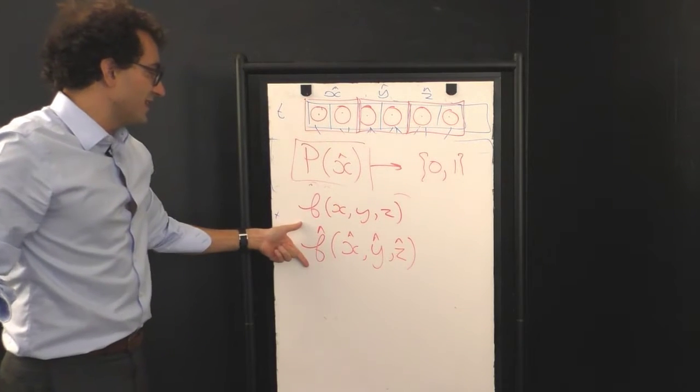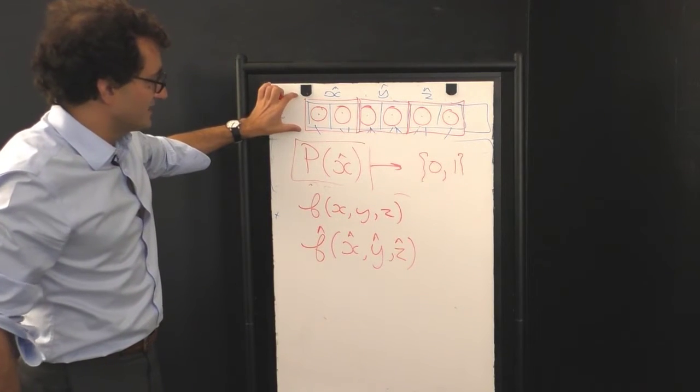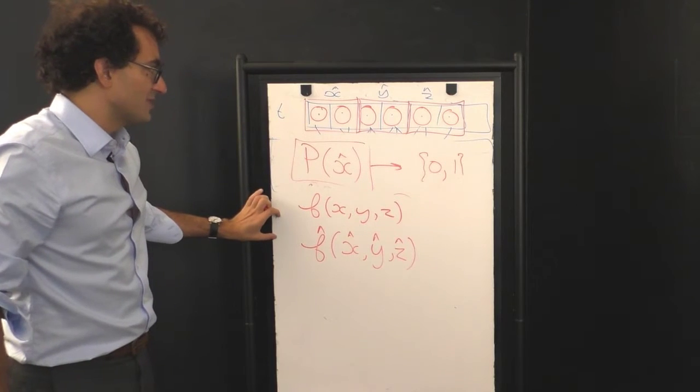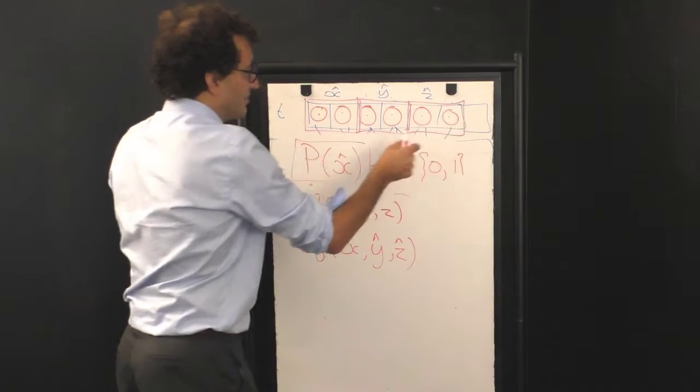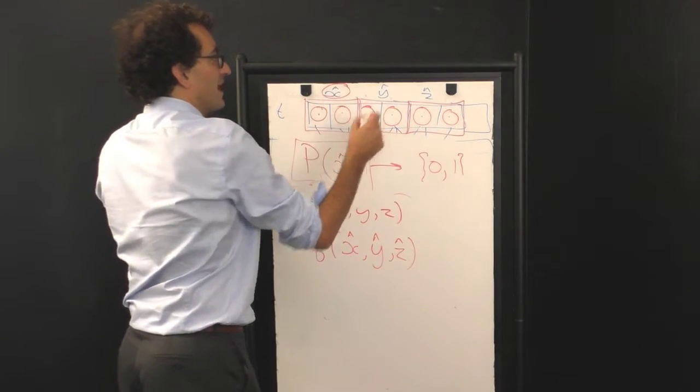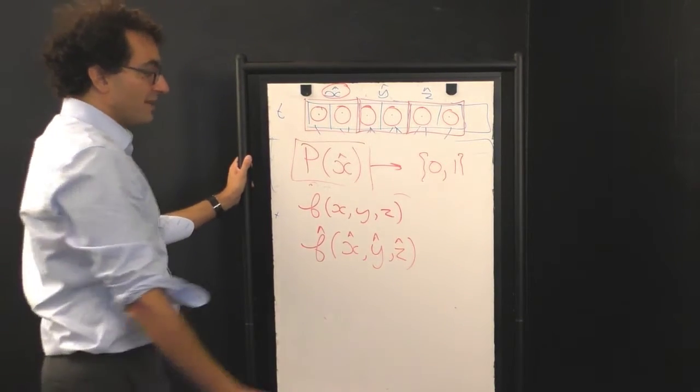What this function does is it takes the state of the system here and evolves it two steps forward. Instead of writing each of these grid cells separately, we write them as a combined variable, x-hat, y-hat, and z-hat.